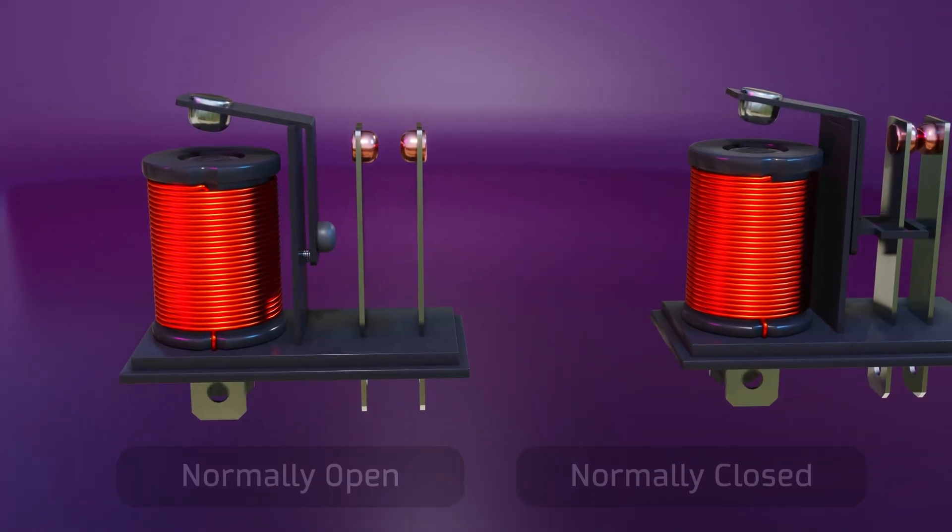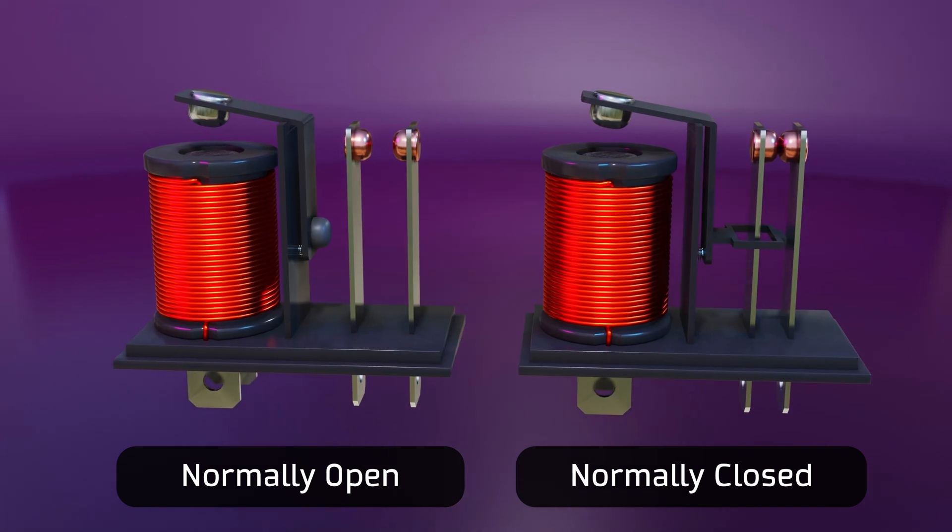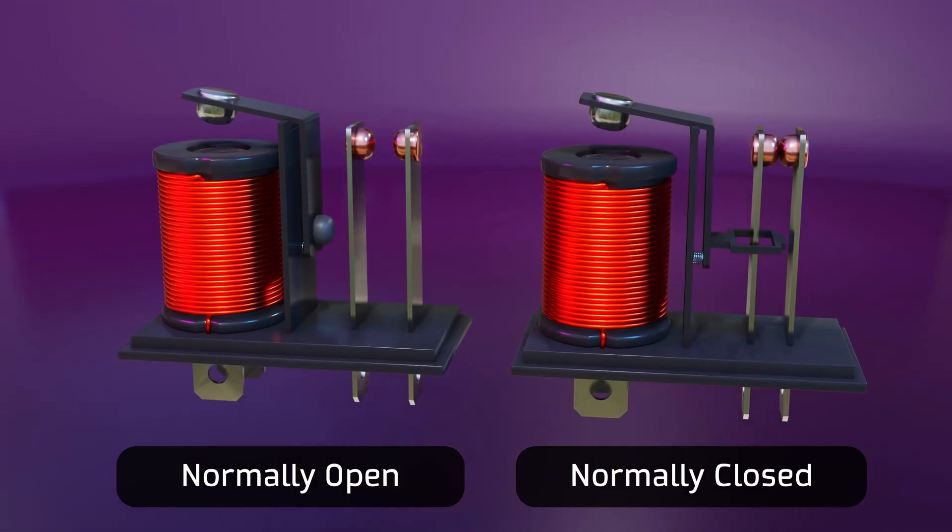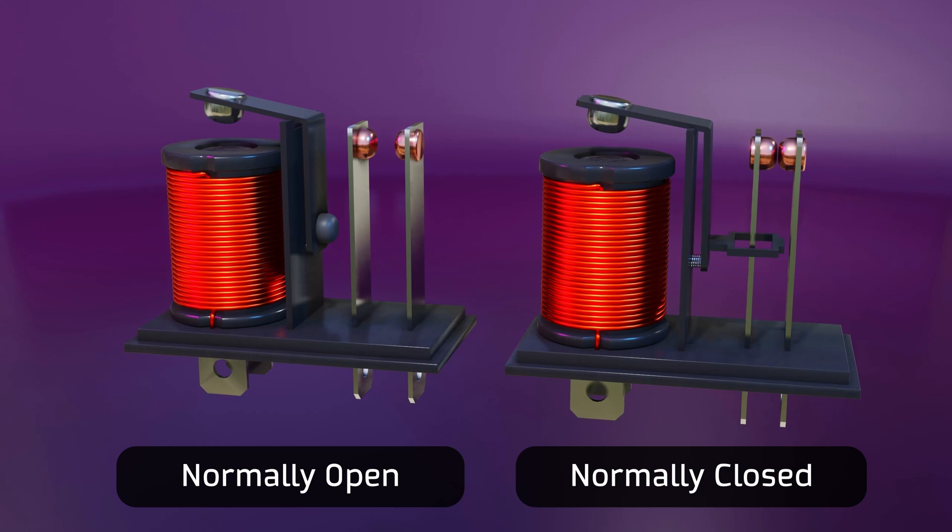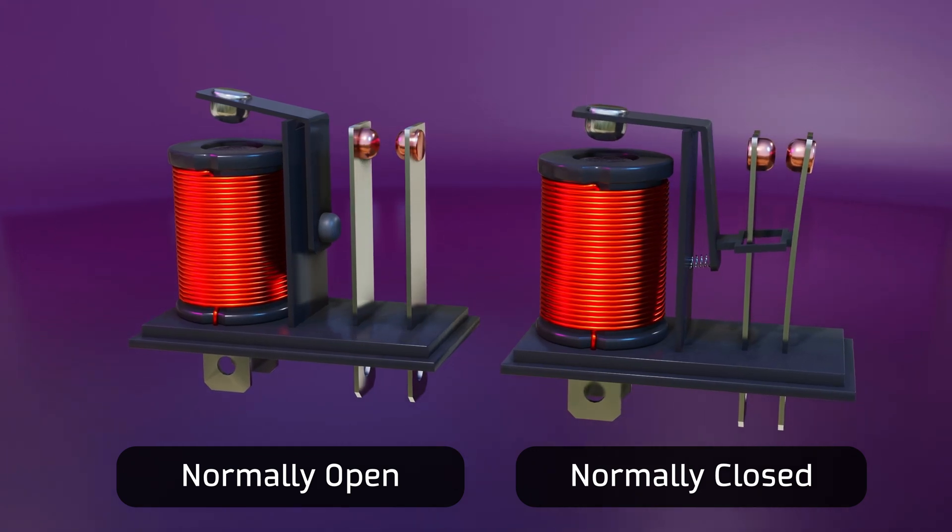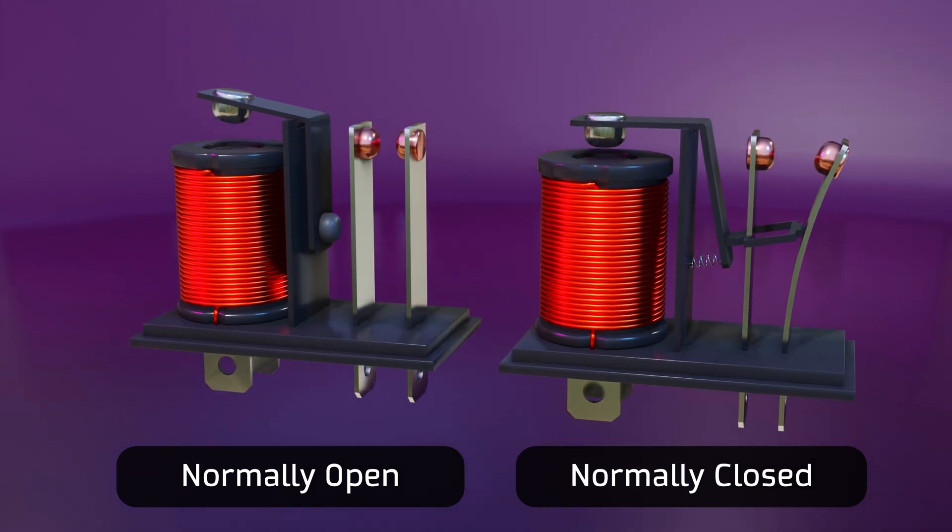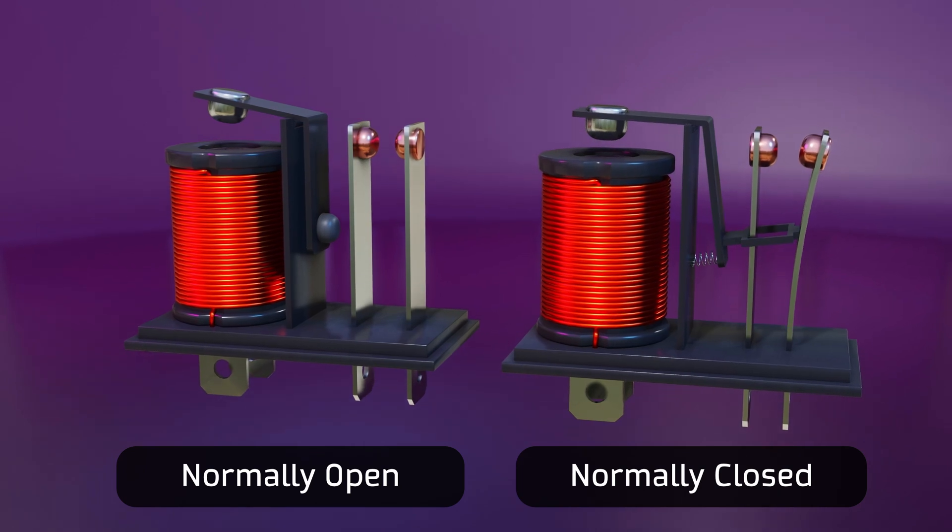That is to say, when no current passes through the electromagnet, current passes through the second circuit, and when the electromagnet is activated, it separates the contacts and prevents the passage of current.